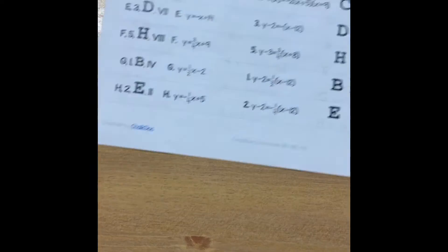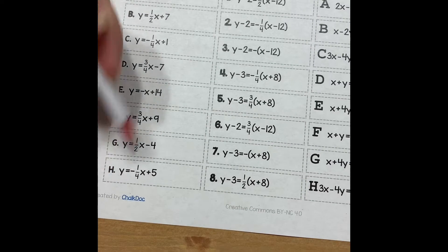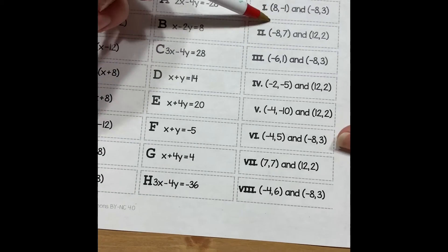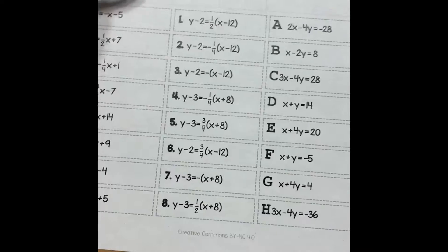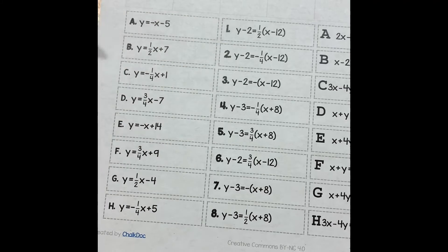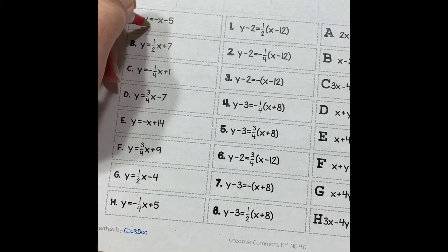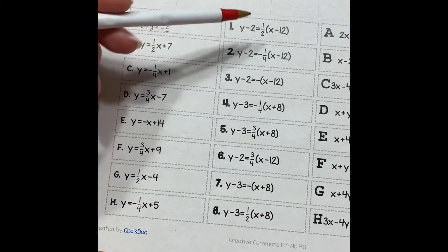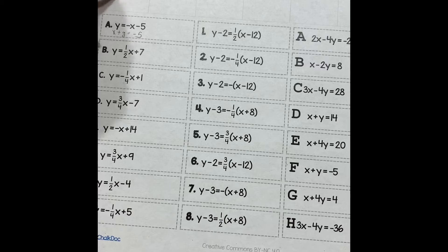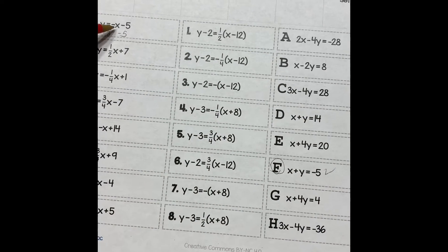The next one is converting between forms. We have eight sets. Each set has slope-intercept, point-slope, standard form, and a point that the line actually goes through. Just like in the previous video, when we start with slope-intercept, we're going to find the ones that match. The standard form is simply moving x and y to the same side — so x plus y equals negative five.